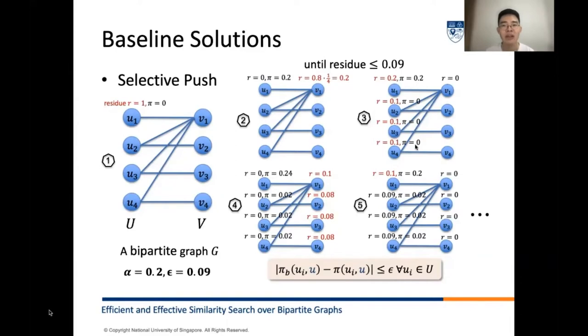In addition, given a source node U1, the random walk probability alpha as 0.2, and a residual threshold epsilon as 0.09, it runs as follows. Initially, it sets the residual R at U1 to 1 and approximate HPP to 0. In the second step, it converts 20 percent of the residual into the approximate HPP value and pushes the remaining residual at U1 to its direct neighbor V1. Node V1 will convert the 0.8 residual from U1 into its own residual by dividing it by its degree.